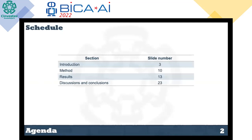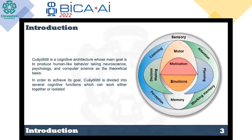The team works in the development of a cognitive architecture named Kwayo Jotul, whose main goal is to produce human-like behavior, taking neuroscience, psychology, and computer science as the theoretical basis.